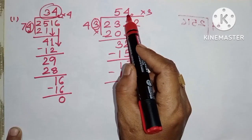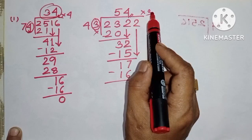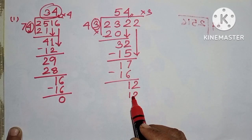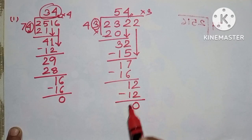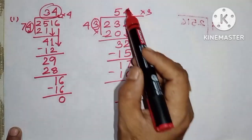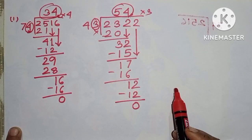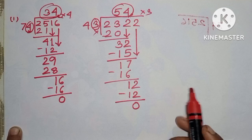We will become 4 and multiply by 3, 2. And multiply by 4 times. Now we will become 4 and multiply by 4 times, and multiply by 3 times.